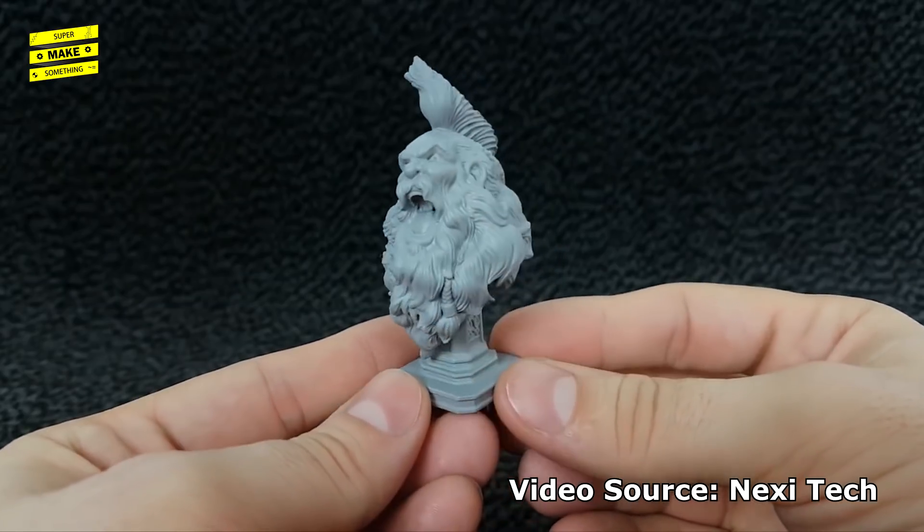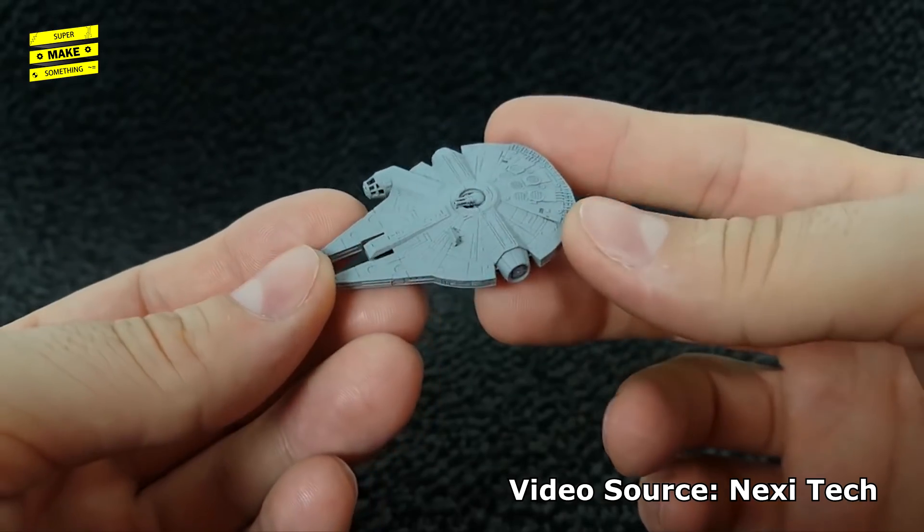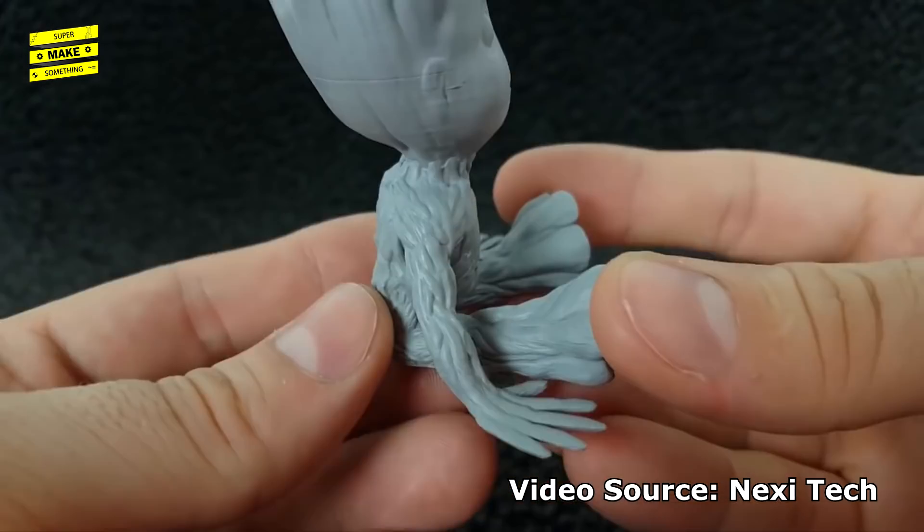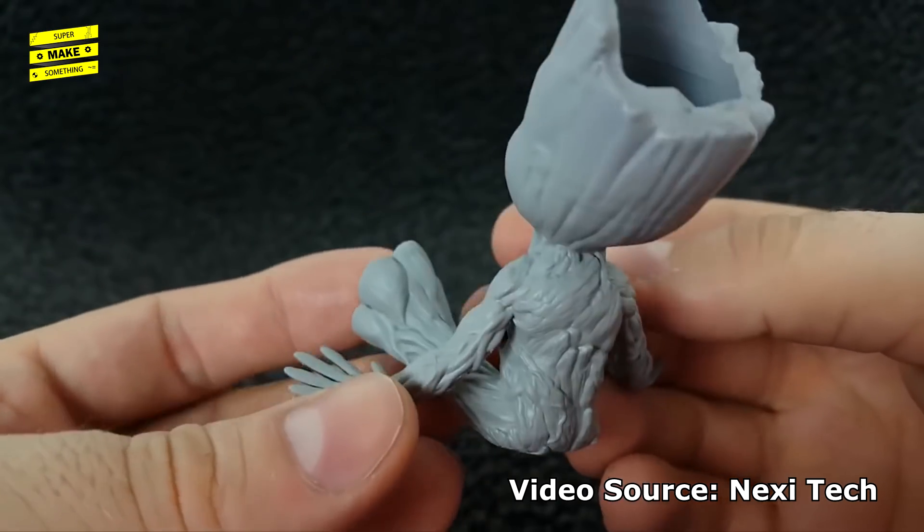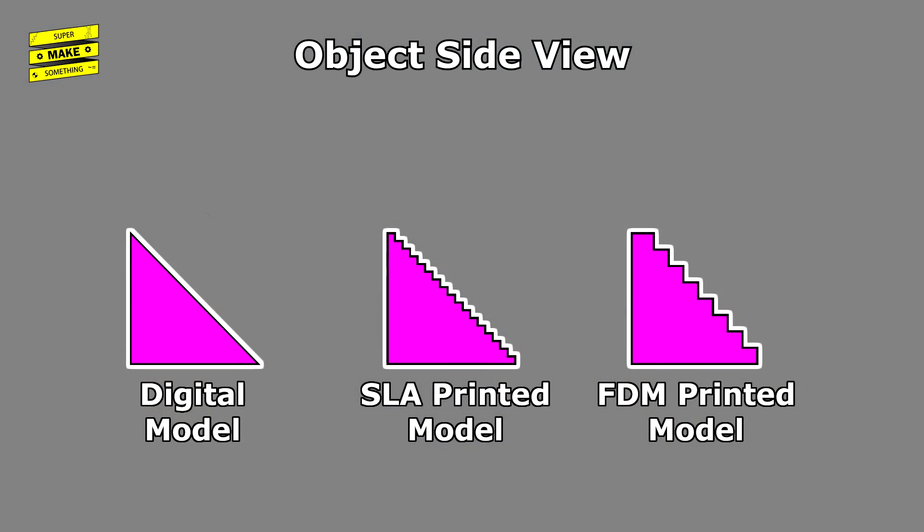That being said, the achievable detail with both of these approaches is typically significantly higher than the resolution that is possible with Hobby FDM printers, especially in the Z direction. Whereas both VAT photopolymerization techniques can produce prints with at least a 50 micron or 0.05 millimeter layer height in the Z direction, the minimum achievable layer height for Hobby FDM printers is usually only 100 microns or 0.1 millimeters.